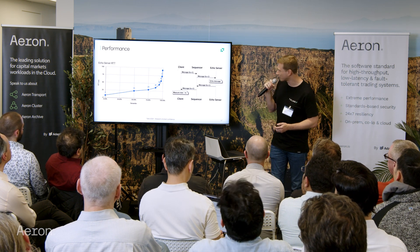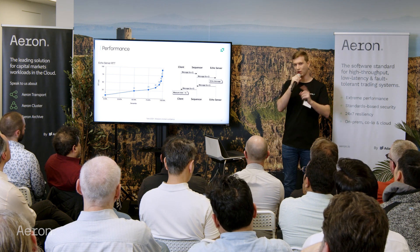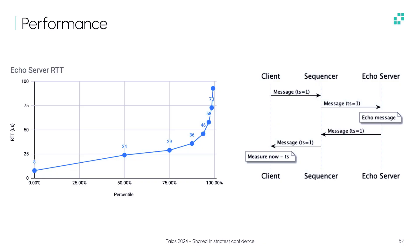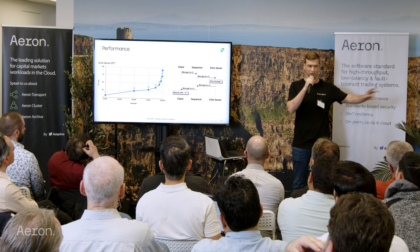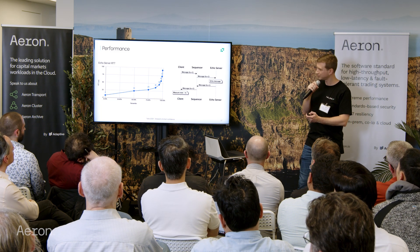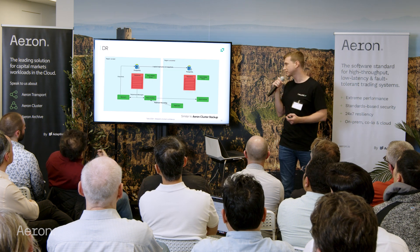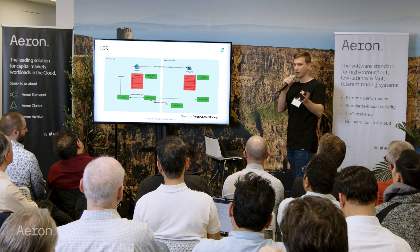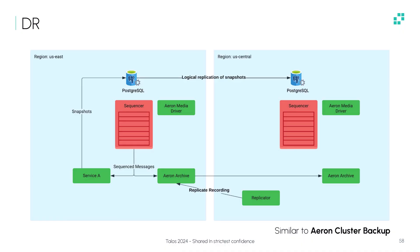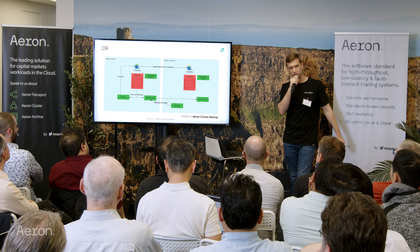Here are some performance numbers. We're cheating a little bit in that this is all over IPC — in memory, not actually going through transport — but you can get very nice in-memory performance numbers with Aeron. This is a client and server: we send a message to an echo server that goes through the sequencer and the echo server responds back, all over shared memory. For DR, similar to Aeron cluster backup, we run primary-backup — not active-active — and replicate the recording from a primary region to a secondary region, doing the same for the database, enabling sequencer failover if there's an issue.